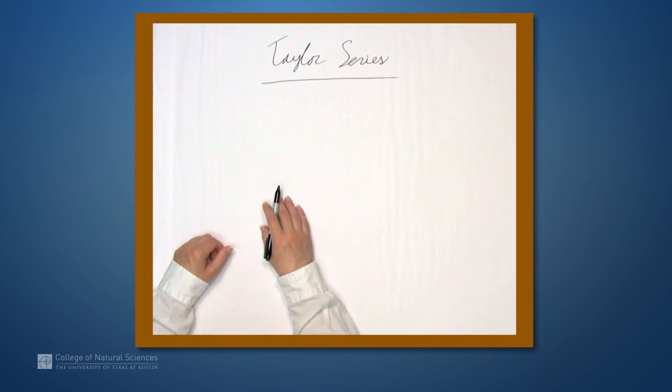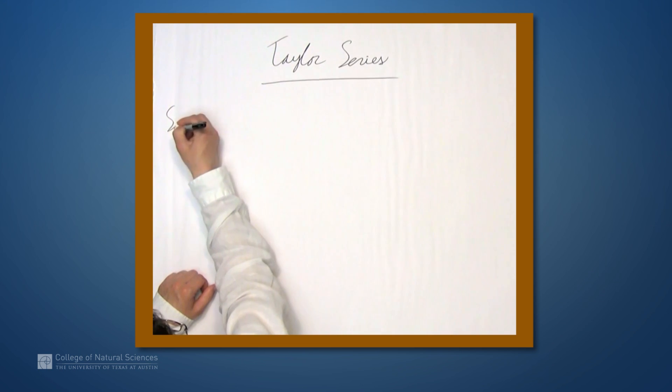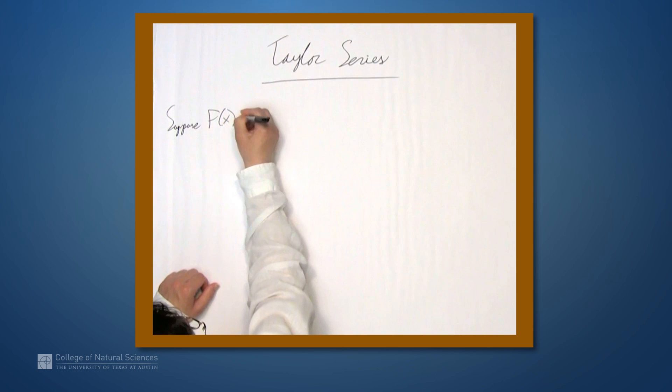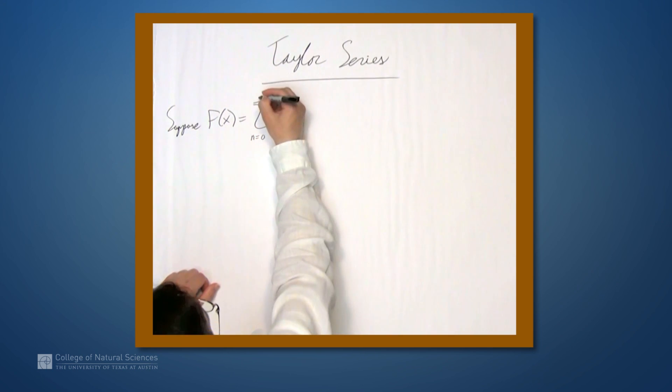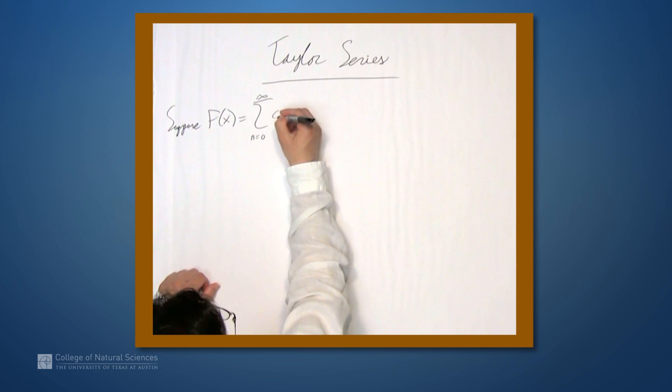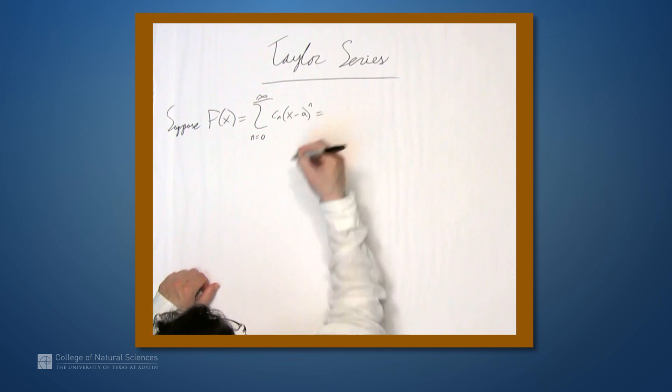We're here at the example table, and in this video we're going to be talking about Taylor series. So let's start with some function f, and let's suppose that this is equal to a power series, the sum from n equals 0 to infinity of cn times x-a to the n.